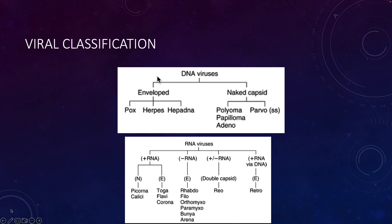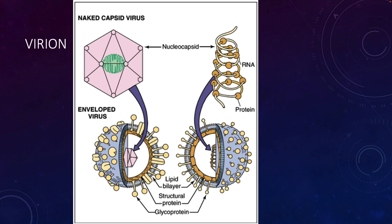DNA viruses include enveloped ones like pox viruses, herpes viruses, and hepadnaviruses, as well as naked ones like papilloma and adenoviruses, and single-stranded DNA viruses like parvovirus. For RNA viruses, we have positive-sense single-stranded RNA viruses — which can serve directly as mRNA — that can be naked or enveloped; negative-sense RNA viruses, which are enveloped; double-stranded RNA viruses with a double capsid; and RNA-based viruses that replicate via DNA, like the retroviruses.